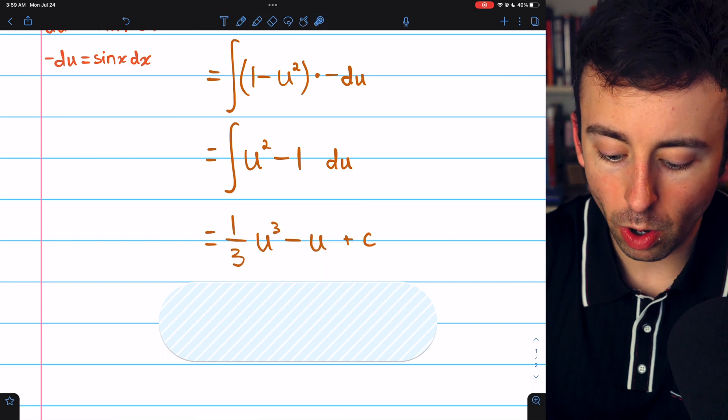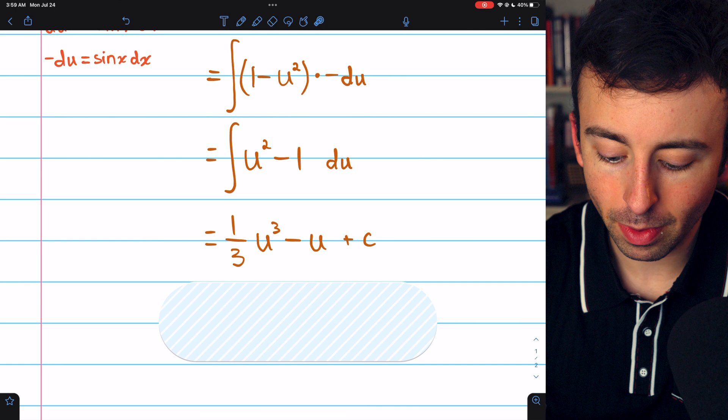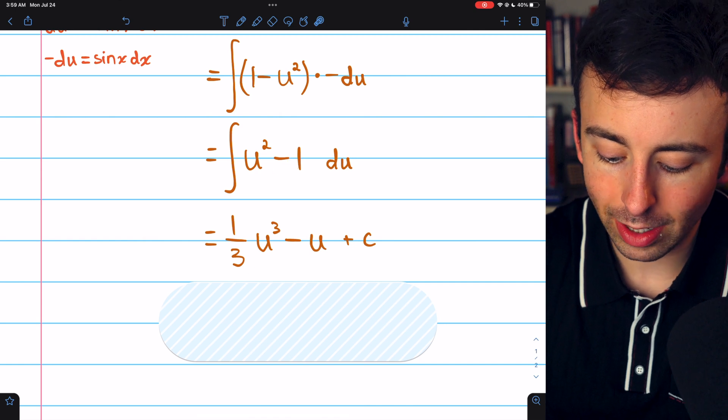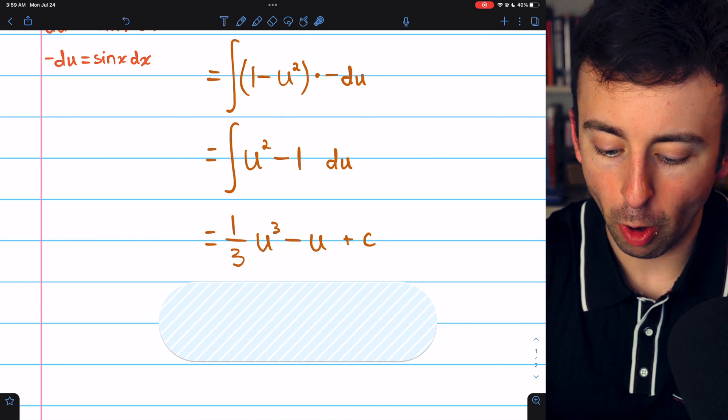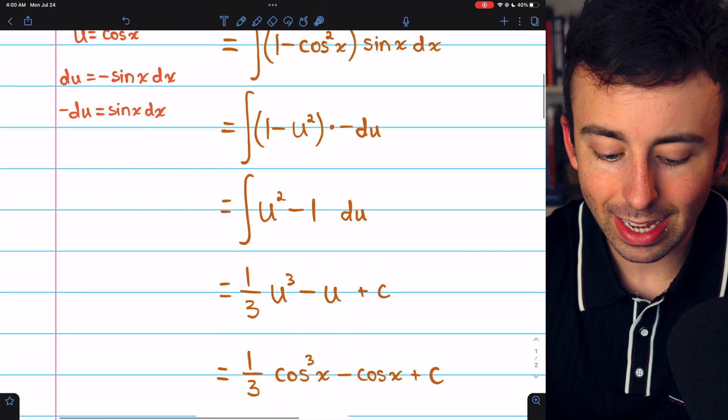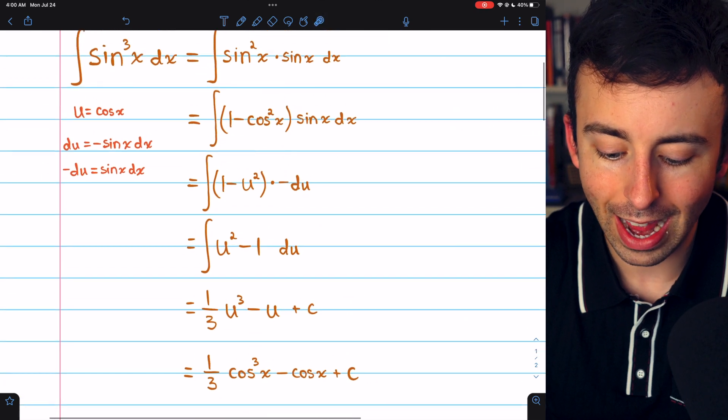Increase the power of u by one and divide by the new power. And then negative one integrates to negative u. Add the arbitrary constant and replace u with what we set it equal to, which was cosine x.